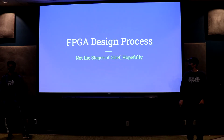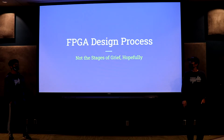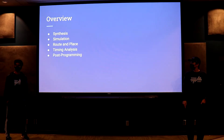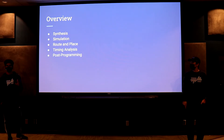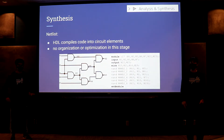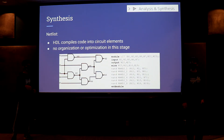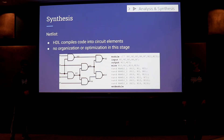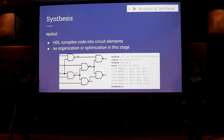To work with an FPGA, there are several stages. In Quartus we've only been doing analysis and synthesis, but now we'll go through the whole flow: synthesis, simulation, place and route, timing analysis, and post-programming. Synthesis is what we've been doing — clicking analyze and synthesize — and it creates netlists for us. Our hardware description language gets synthesized into gates and other circuit elements. At this stage it's not optimizing; it's just converting your HDL to gates on first pass, with no optimization yet.